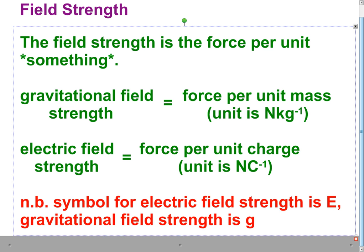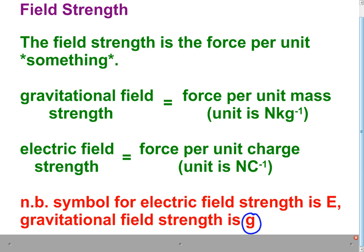Now, something to note. The symbol for electric field strength is capital E. The symbol for gravitational field strength is lowercase g. That is something you would have seen before, I think. So, field strength is force per unit something, where the something is the thing that interacts with the field.